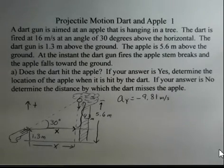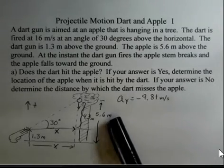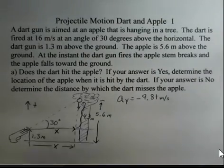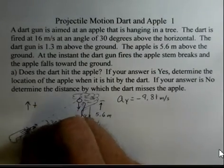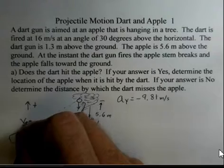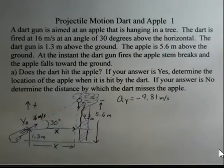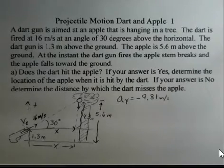X is unknown. We are 1.3 meters above the ground for the dart where it starts. The apple is 5.6 meters above the ground and the dart starts its motion here. This launch velocity is 16 meters per second at an angle of 30 degrees, and we want to determine if the dart hits the apple.